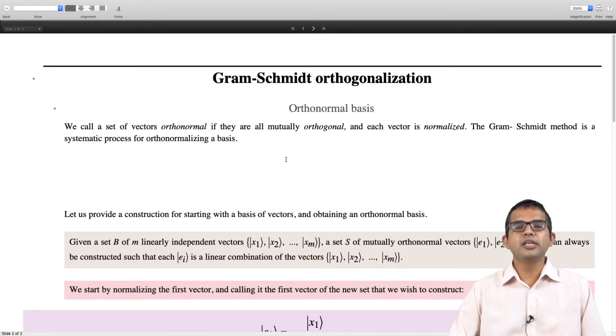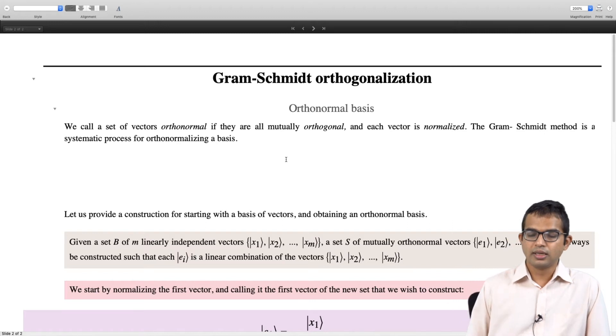Making each vector normalized simply means if you take the inner product of a vector with itself you have to get one. Orthogonal already gives you some convenience, but it is just one more step to normalize it as well. We will show here how there is a systematic way to take any basis and get an orthonormal basis.